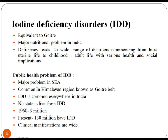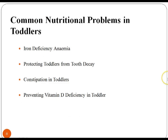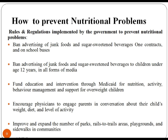No state is free from this deficiency and clinical manifestations are wide. How to control iodine deficiency: use iodized salt and oil, monitoring and surveillance, manpower training, and mass campaigns through public awareness about iodine deficiency and use of only iodized salt for regular consumption. Common nutritional problems in toddlers include iron deficiency anemia, protecting toddlers from tooth decay, constipation, and preventing vitamin D deficiency in toddlers.